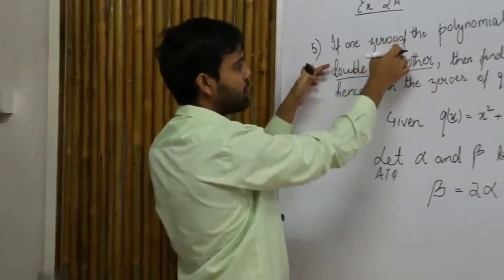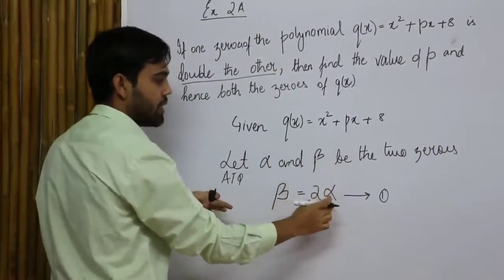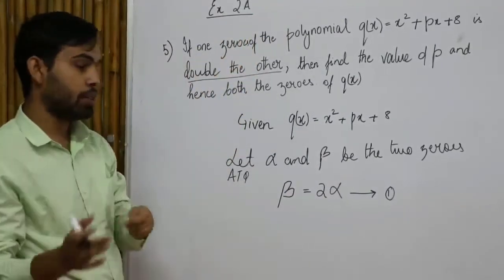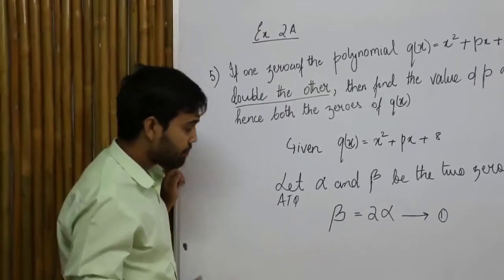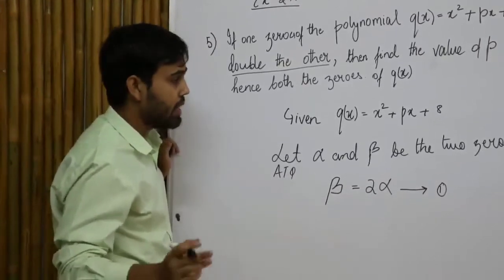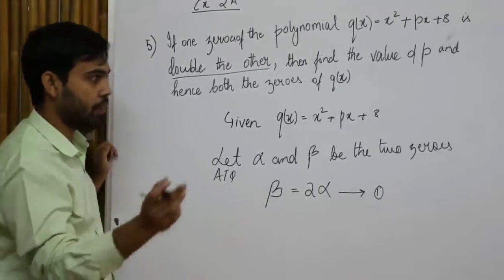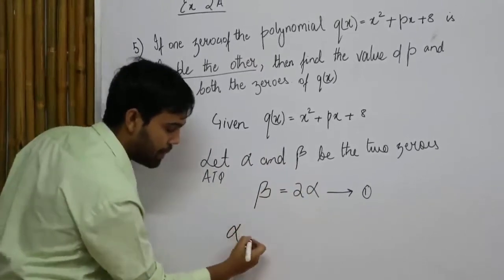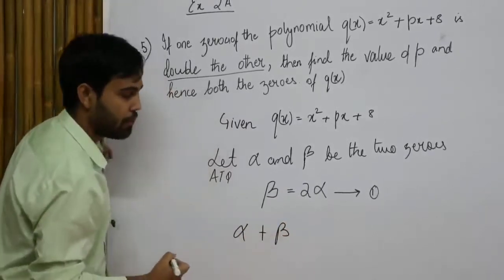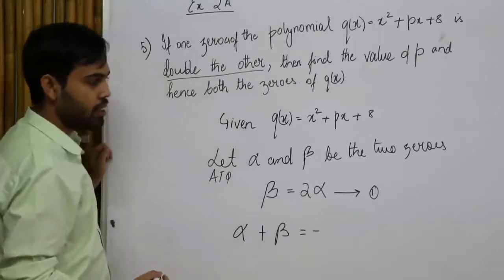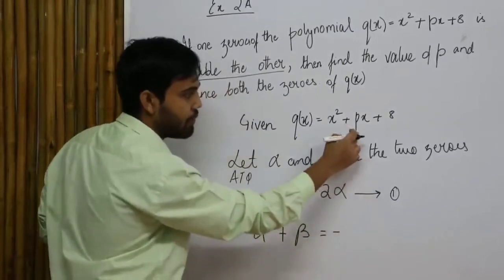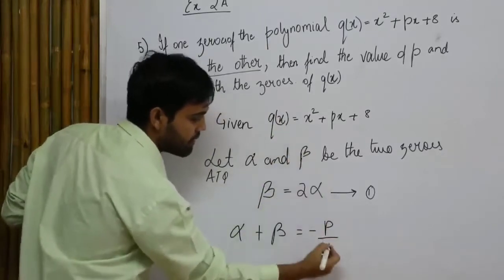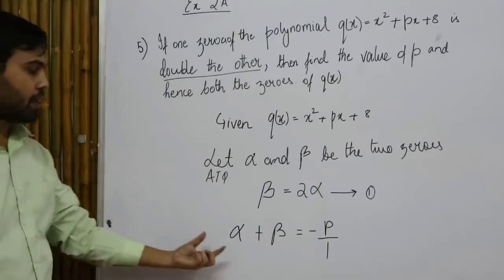According to the question, beta equals twice of alpha. Now I will use the relations we looked at in earlier classes. The first relation says the sum of the roots equals minus the coefficient of x divided by the coefficient of x squared. So alpha plus beta equals minus p over 1.